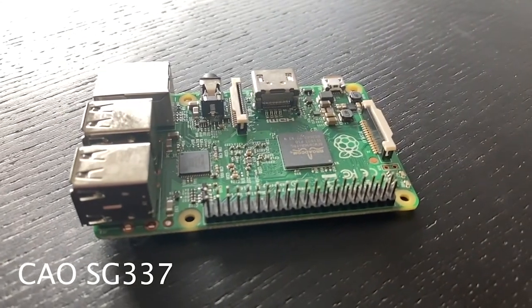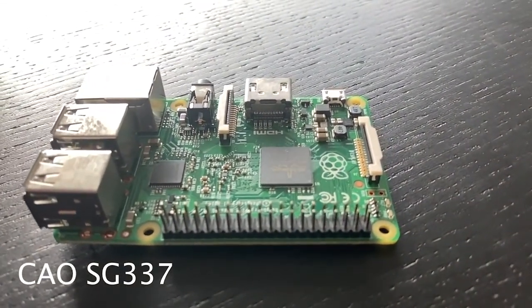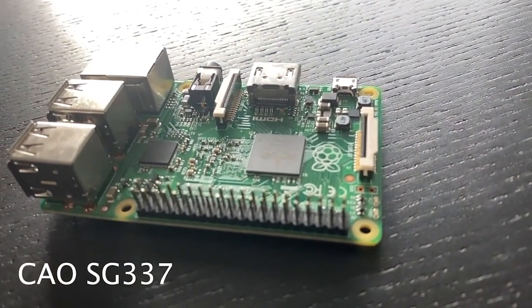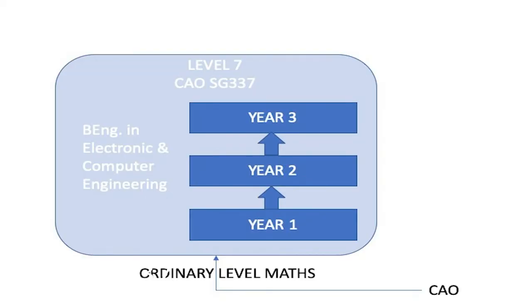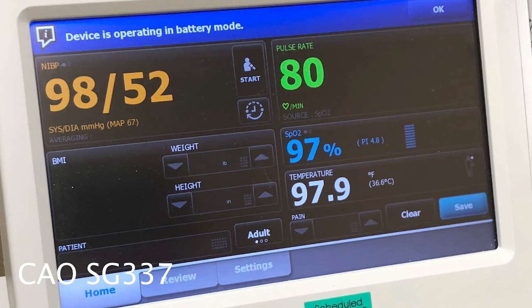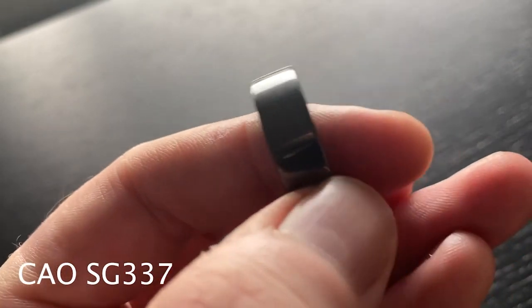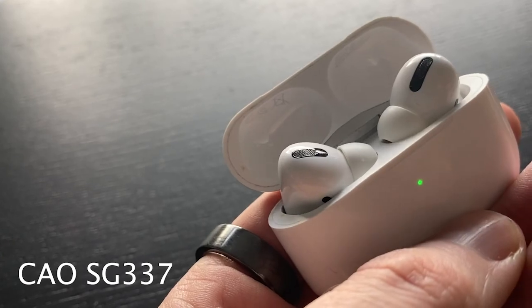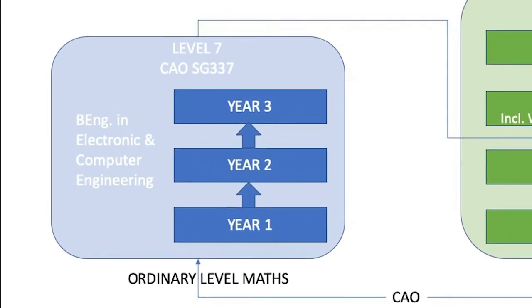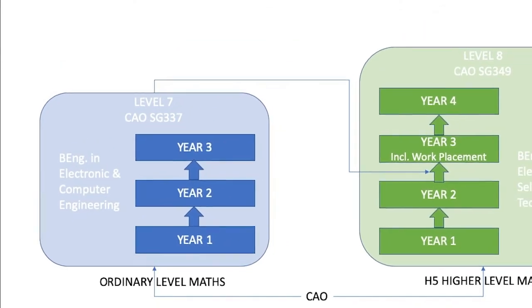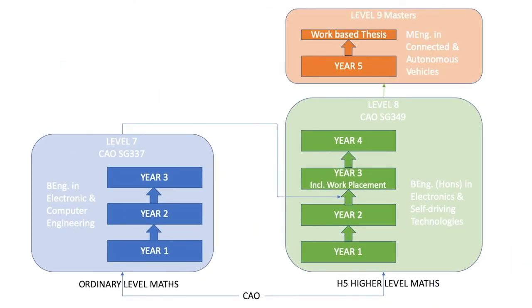If you are interested in technology or engineering but are not doing higher level maths, why not consider our level seven in electronic and computer engineering? This is a three-year program that looks at the design and development of embedded electronic systems. These are the medical devices that keeps us healthy, the consumer devices that keeps us entertained, or the controlled systems that keeps us safe on the road. You can then progress on to the level eight in electronics and self-driving technologies, and from there to the masters. Check out the link below for more information.